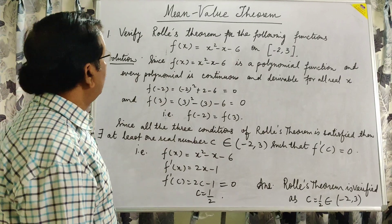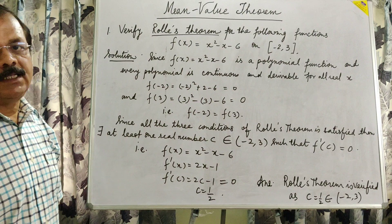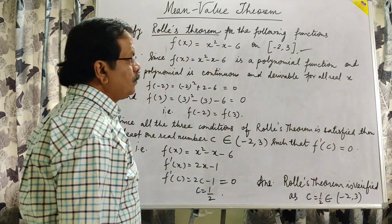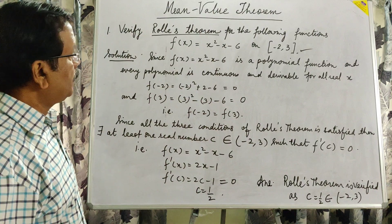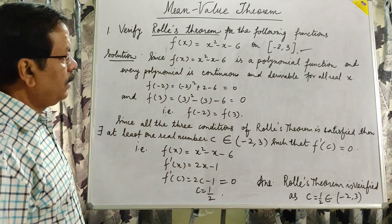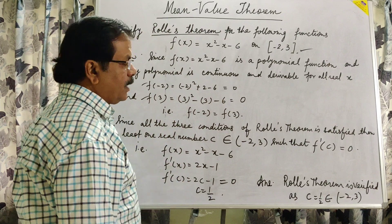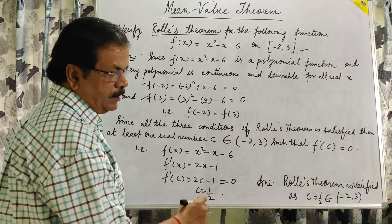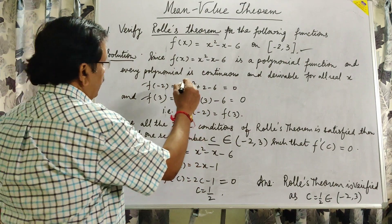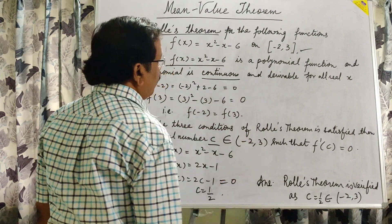First question: verify Rolle's theorem for the following function. f(x) equals x squared minus x minus 6 in the closed interval [-2, 3]. There are three conditions of Rolle's theorem: the function should be continuous in the closed interval, derivable in the open interval, and the value of the function at both endpoints must be equal. Then there exists at least one real number c for which f'(c) equals 0. We know that any polynomial function is continuous and derivable for all real values of x.